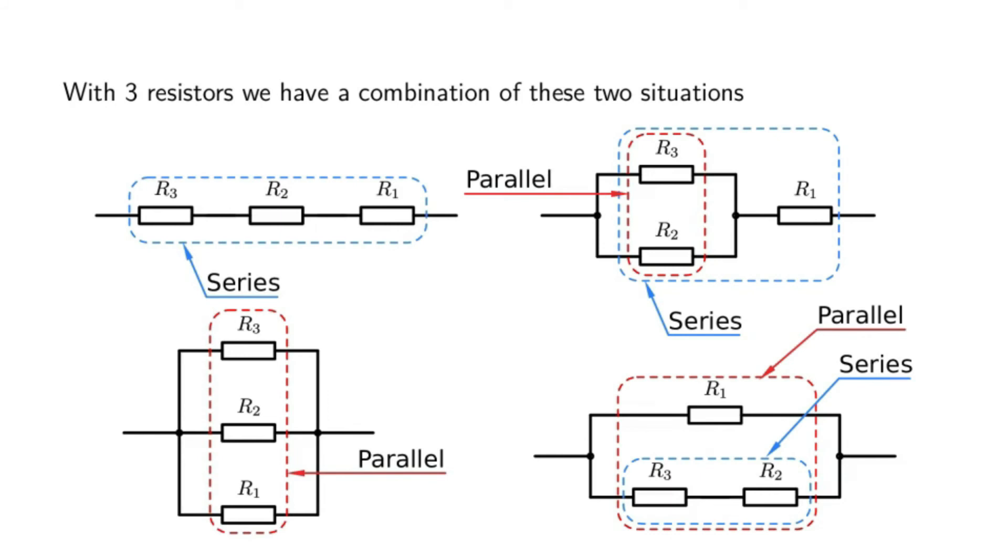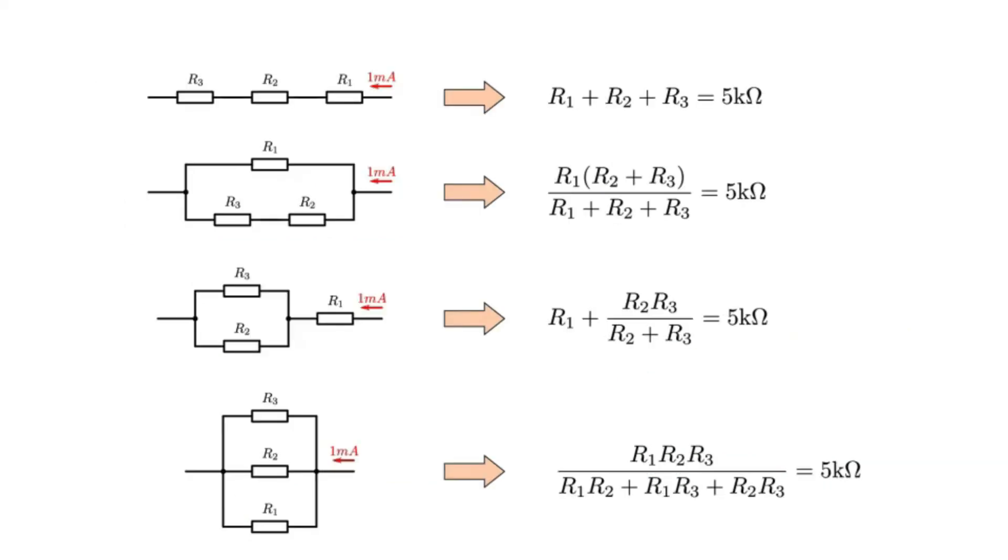With three resistors, we have a mixture of the two cases. In this case, we first associate in parallel R2 and R3, and the result of that we associate in series with R1. And in this next case, we first associate R3 and R2 in series, and the result of that we associate in parallel with R1. In conclusion, for each internal arrangement of the three resistors, we will have a different equation connecting voltages with resistors.